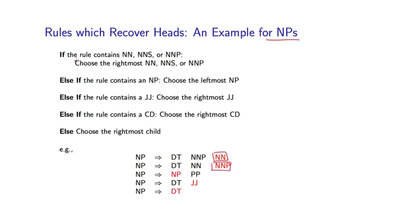So the first rule says that if the rule contains a singular noun, a plural noun, or a proper noun, then choose the rightmost of those nouns. So that would apply to these two rules here. They both contain one of these three categories, in which case we just return the rightmost category as being the head of that rule.